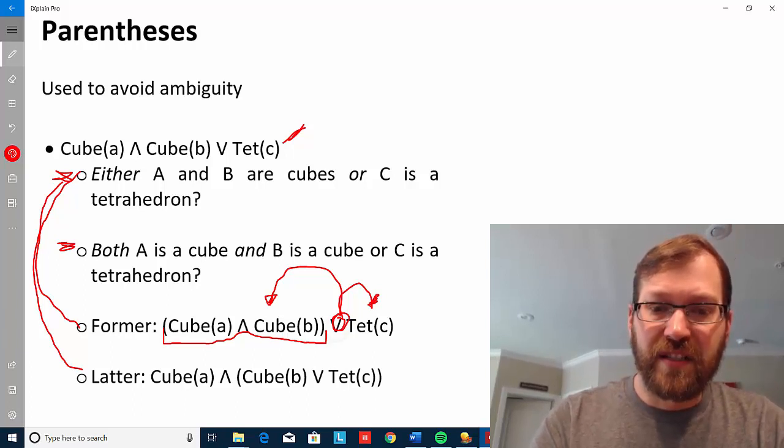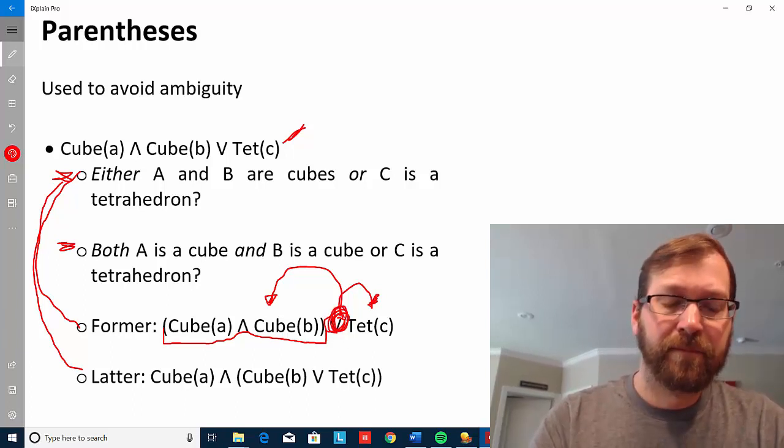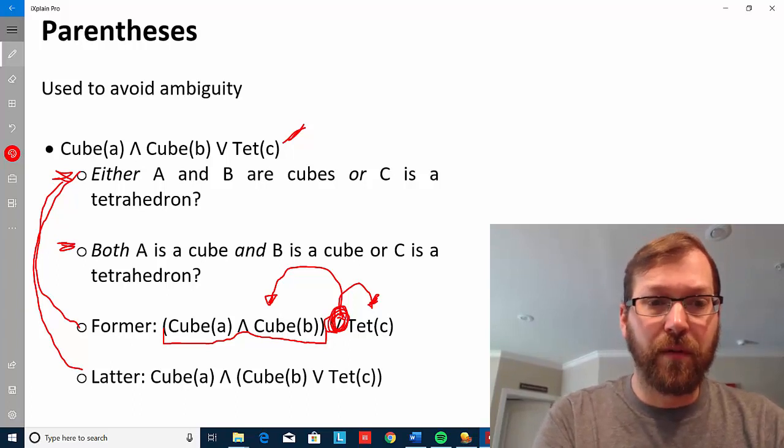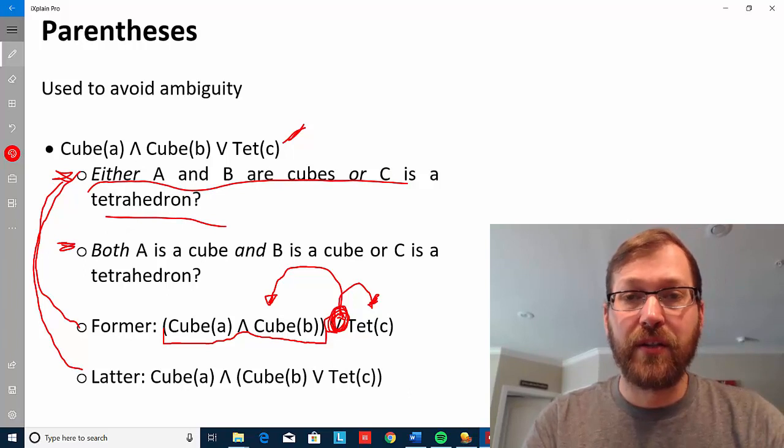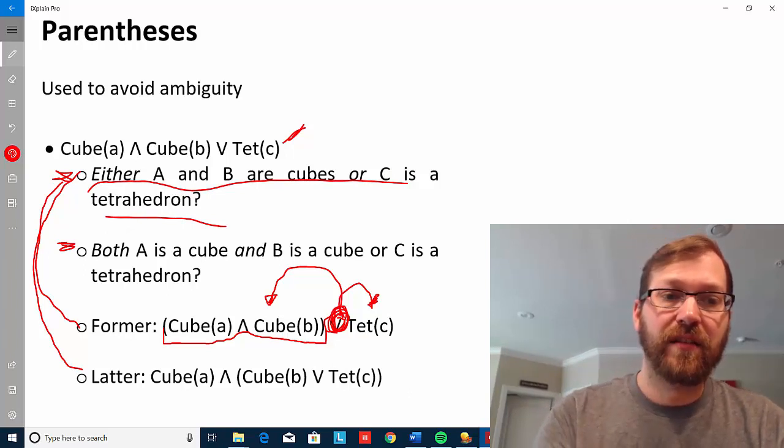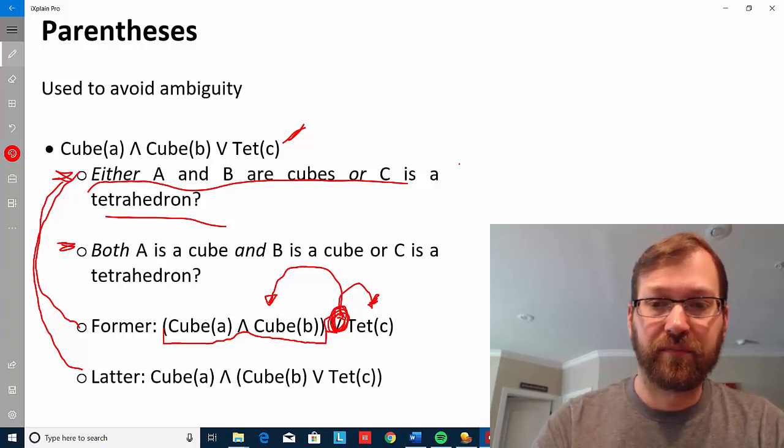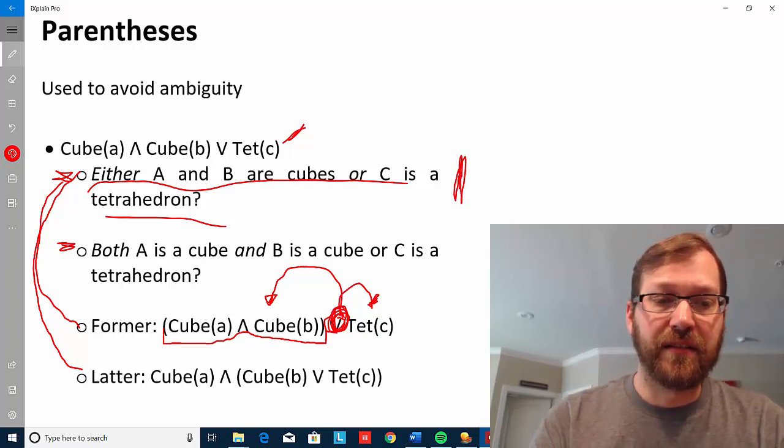So because this is the disjunction sign, it's going to read in the former way that either A is a cube and B is a cube or C is a tetrahedron. It lets us know that this is the reading and not the second sentence.